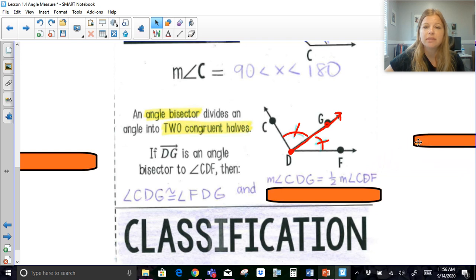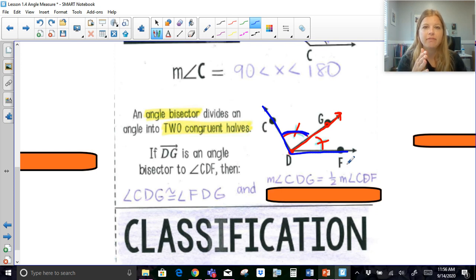What I also then can say is, okay, well, if these are then congruent to each other, then their measures are equal. And if their measures are equal, I can say that this smaller angle, the measure of CDG, this angle here, is actually half the measure of the entire angle, CDF. So if I cut anything into half, then one of those halves is equal to half of the whole, which is what this is saying here.